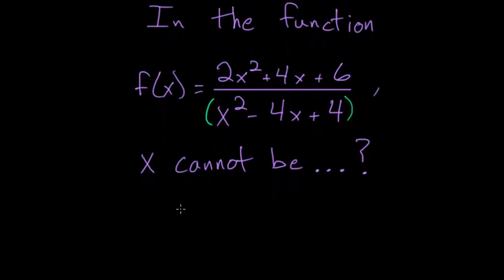So x squared minus 4x plus 4 cannot equal 0. You could try factoring this, though in this case it looks like it doesn't factor. So let's just use the quadratic formula.